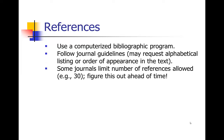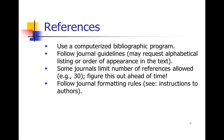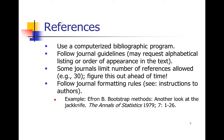Be aware that some journals limit the number of references — figure this out before you start writing. We once had 45 references and then realized the journal only allowed 30. It is incredibly hard to go back and remove references because your whole text depends on them, requiring major changes. Find out ahead of time if there's a limit. Follow journal formatting rules — if using a computerized program, it will know the specifics for each journal. Otherwise, check the instructions for authors or look at a published paper in that journal.